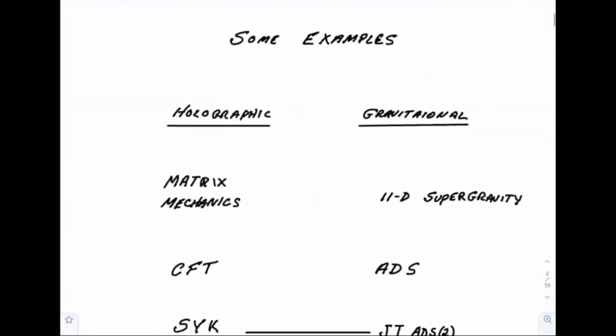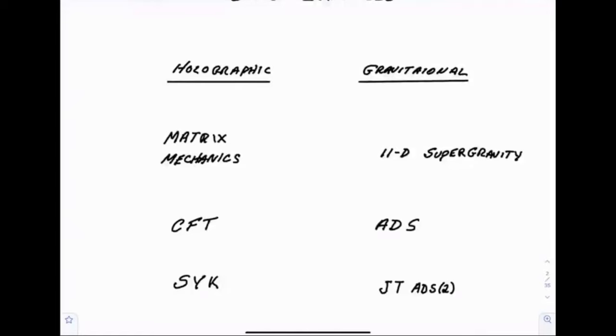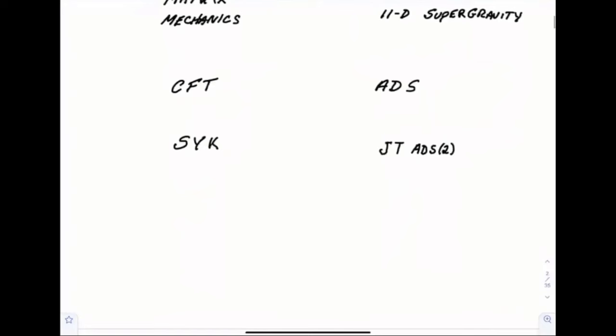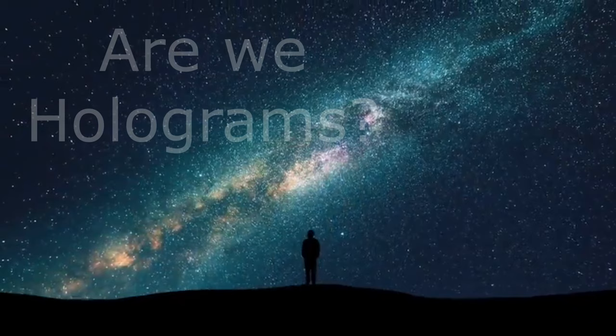Some examples are very familiar to us. Matrix mechanics, matrix theory, which is a pure theory of the quantum mechanics of matrices. On the right-hand side is 11-dimensional supergravity. Conformal field theory, ADS, SYK, JT gravity, and so forth. Notice the divide is a sharp divide between what is on one side, gravitational bulk physics, and on the other side, pure quantum mechanics.